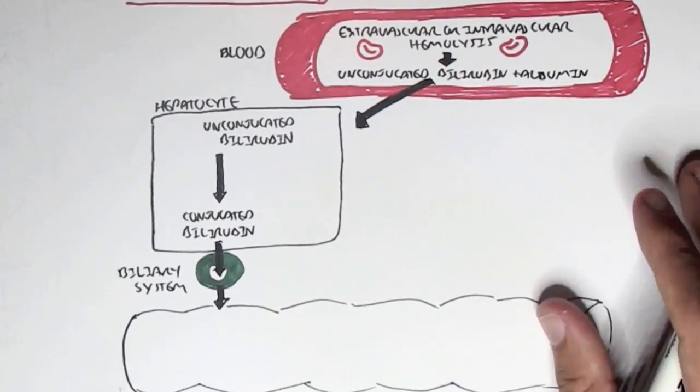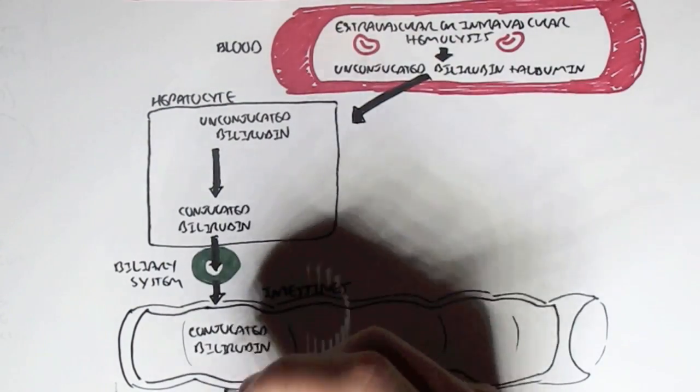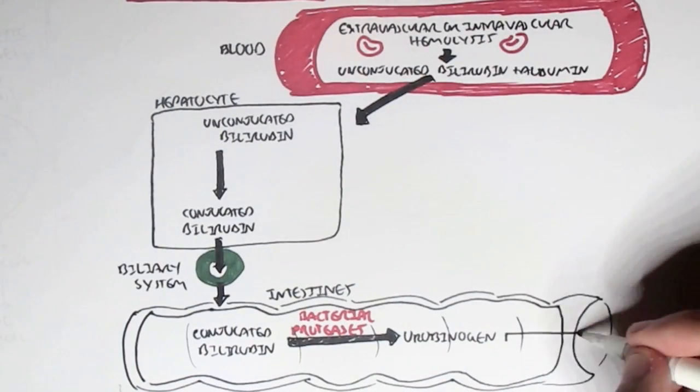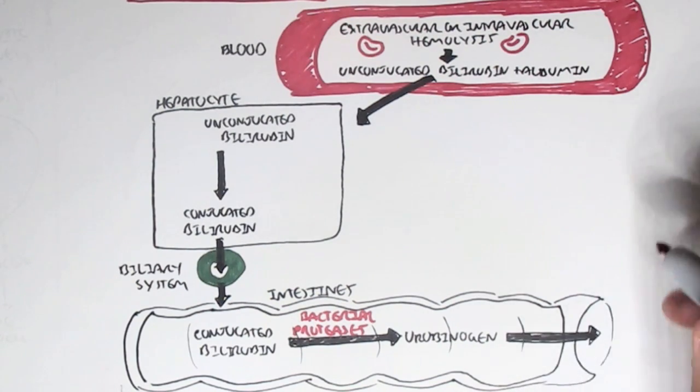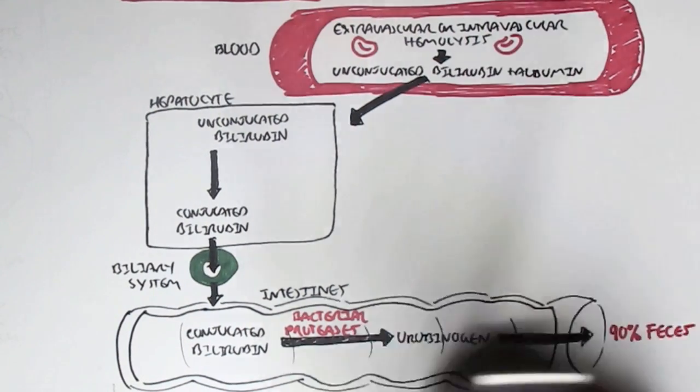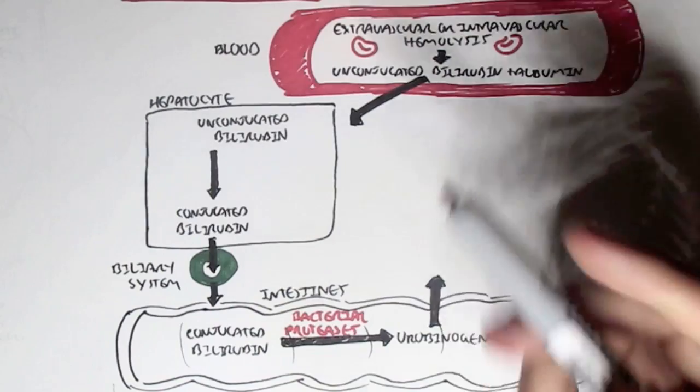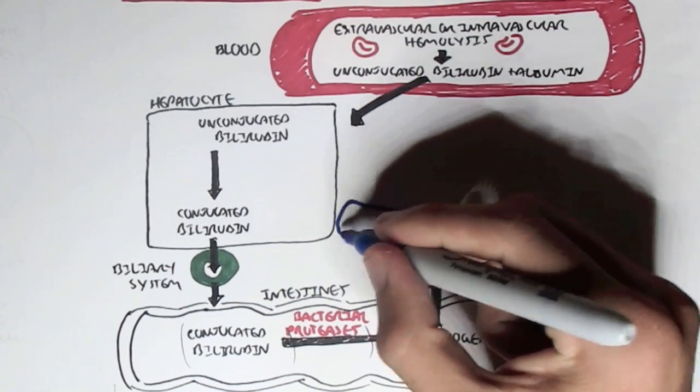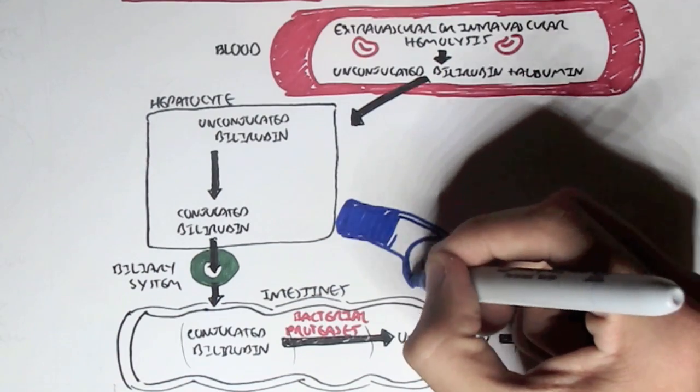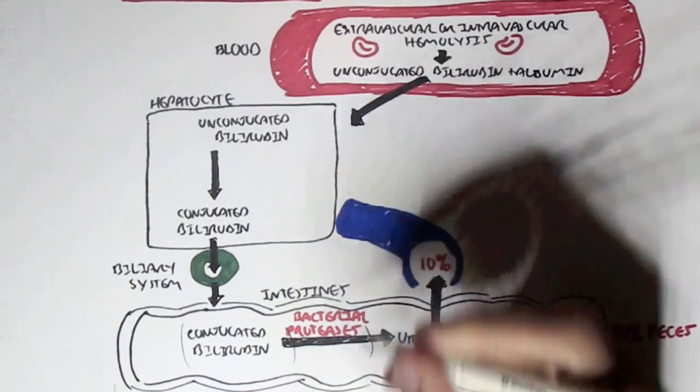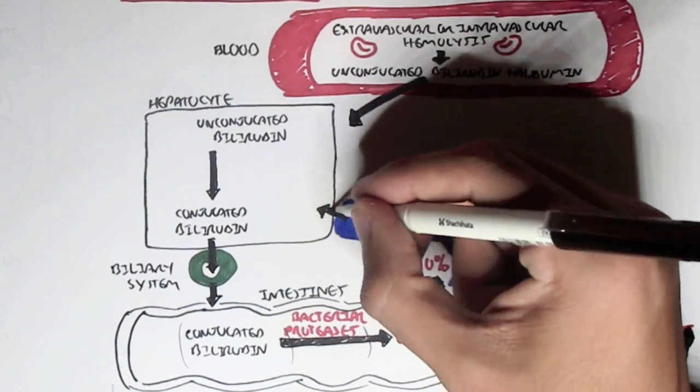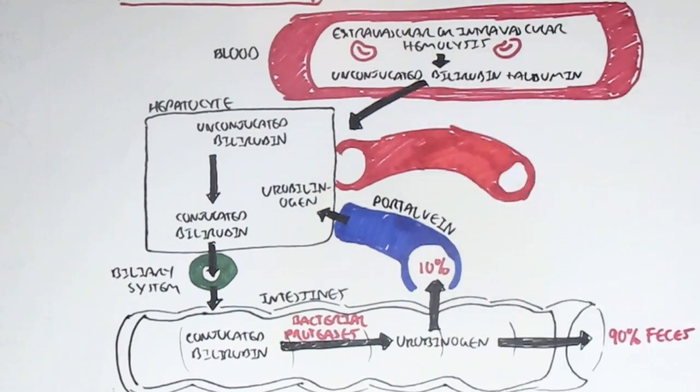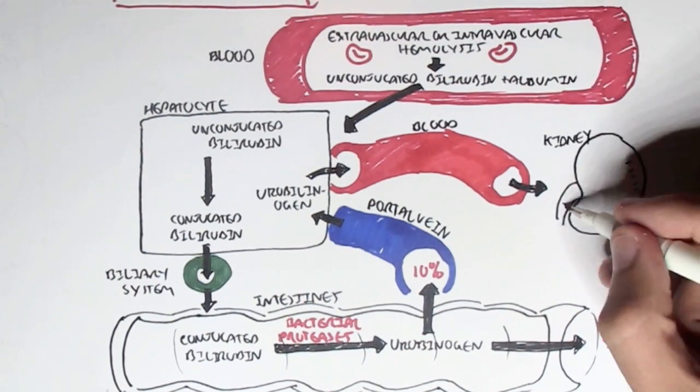The conjugated bilirubin will then convert to urobilinogen through bacterial proteolysis. About 90% of the urobilinogen will actually be excreted as feces. So 90% of the bile pigments will be excreted as feces. The other 10% will be reabsorbed through the portal vein where it will then enter back into the liver. This urobilinogen will then be in the liver and will then travel back into the bloodstream towards the kidneys where this 10% of urobilinogen will be excreted as urine.